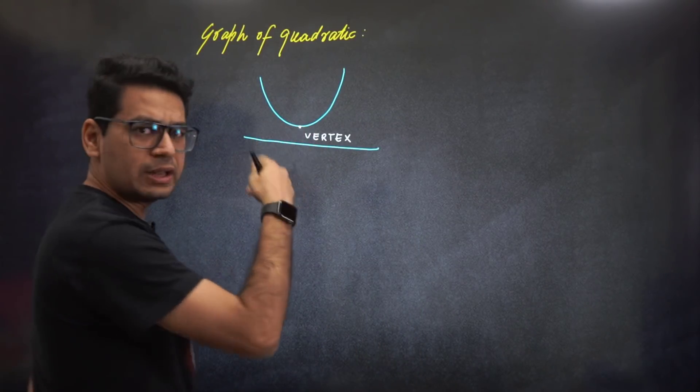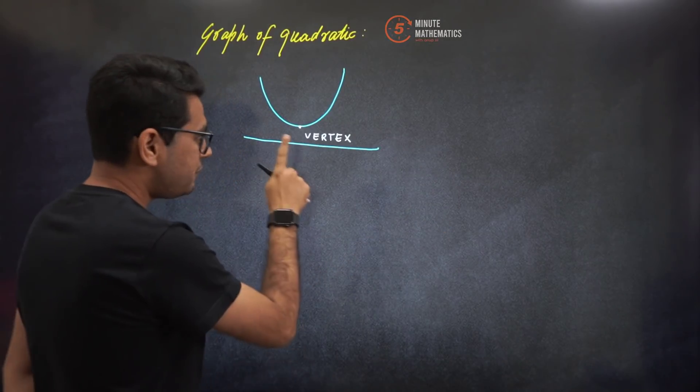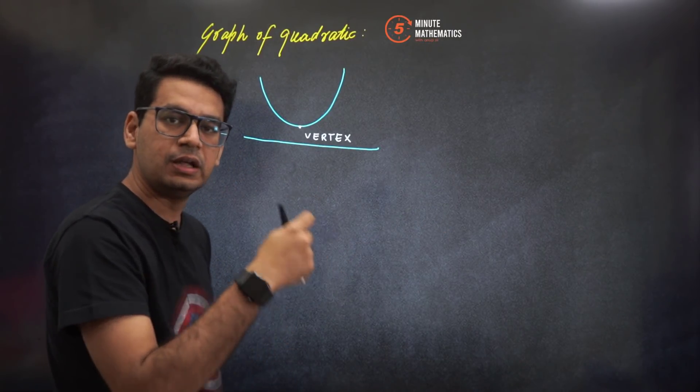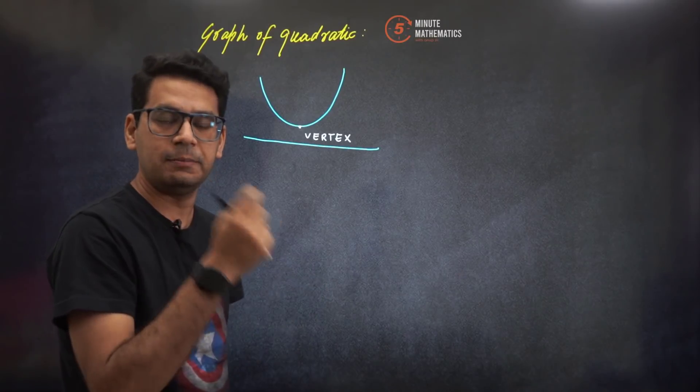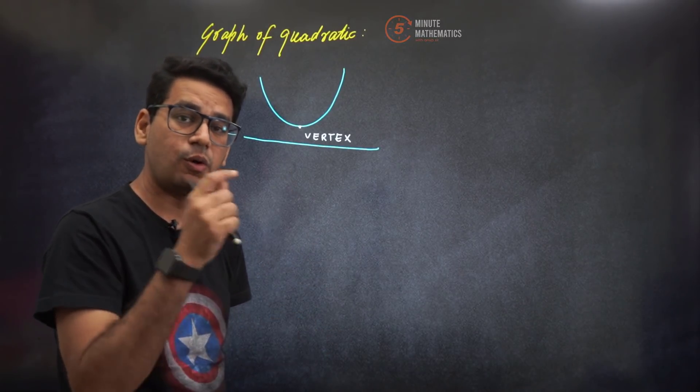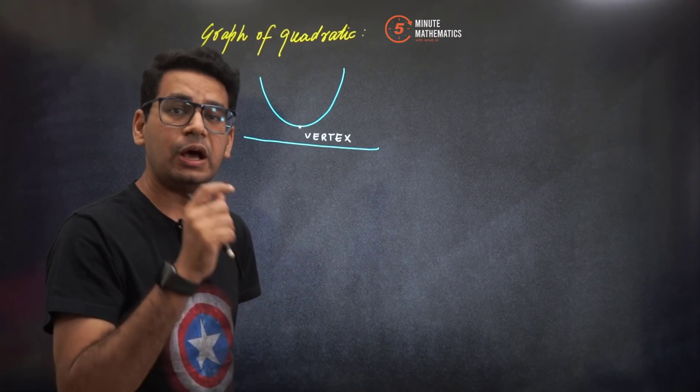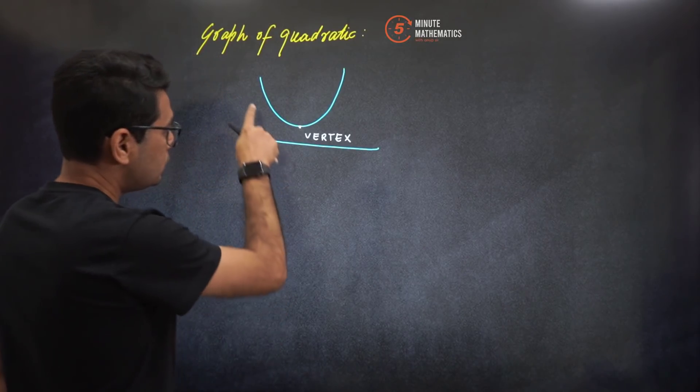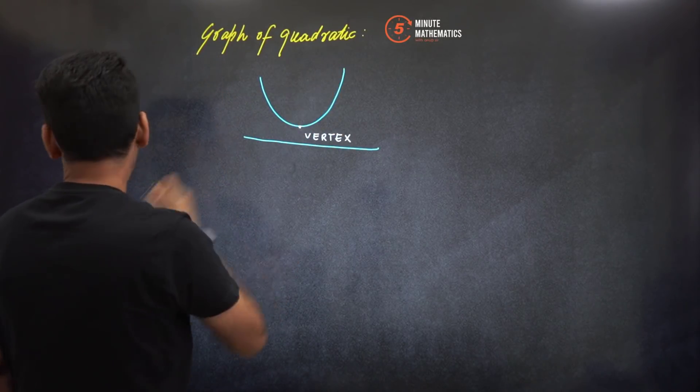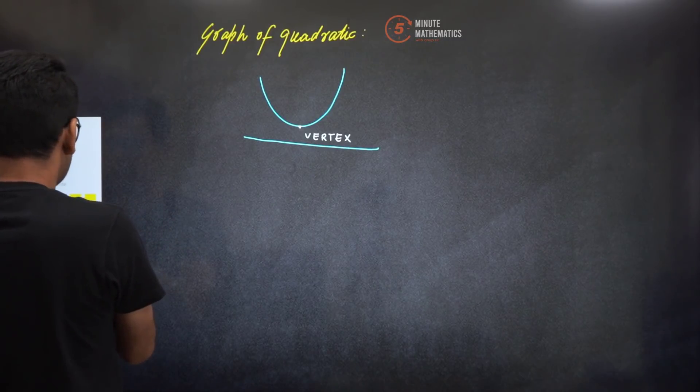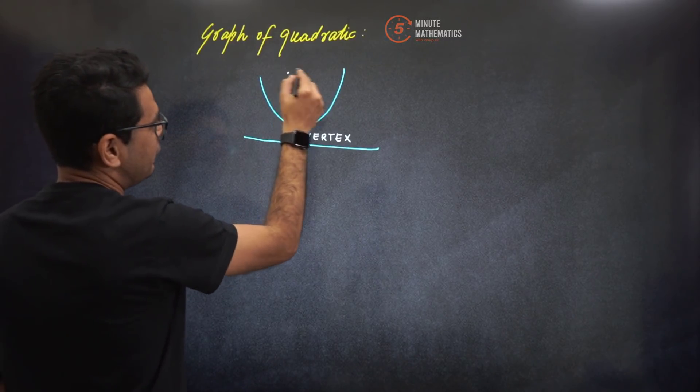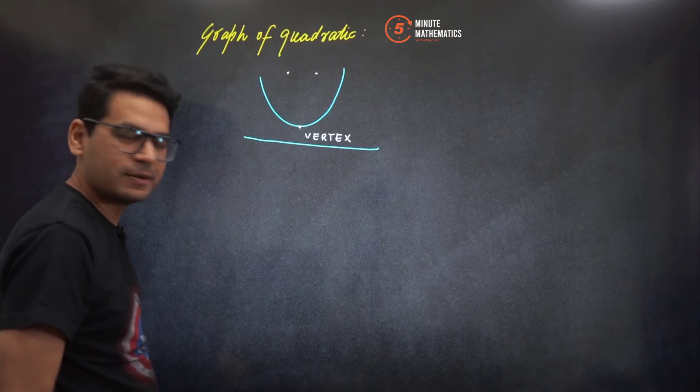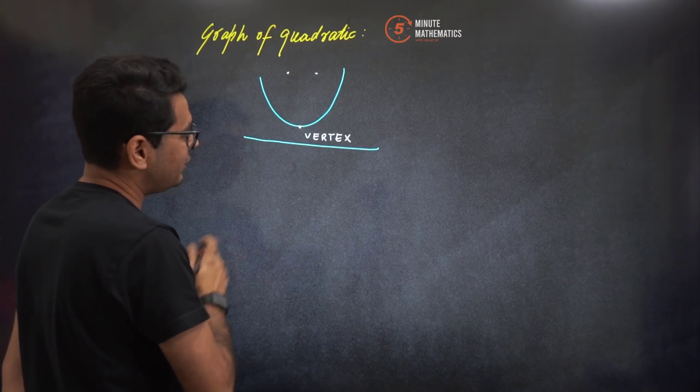The graph of quadratic we know can be multiple types, but this is a very special case which you will find repeated very often in maths, whether you are in class 11th, class 12th, or preparing for any competitive examination. This is the special curve and the beauty of this particular curve is that we call it the smiling curve.